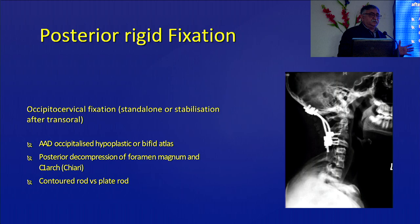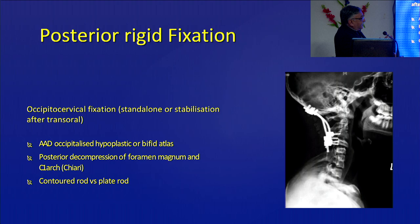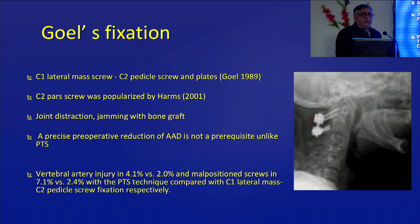Then came the era of rigid constructs. By rigid, I mean a screw going into bone — that is the fundamental difference from semi-rigid constructs. A rigid construct has a screw in one bone, another screw in another bone, and a rod fixing the two together. People started putting screws everywhere; Magal's transarticular technique was part of this era. Sometimes a contoured rod or plate-rod system was used.